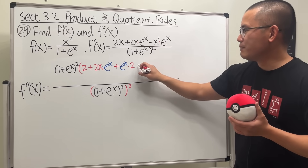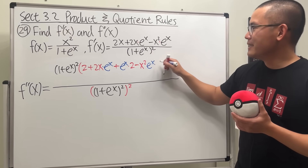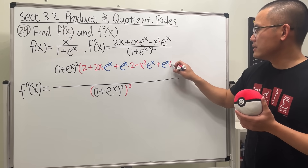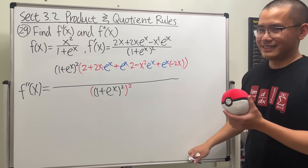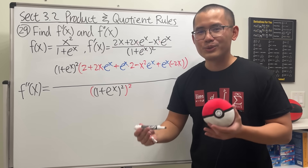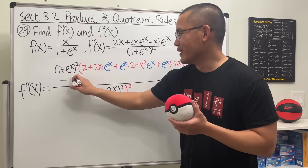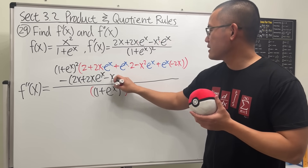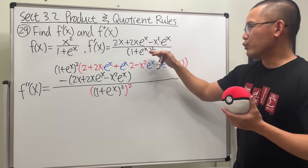Now we use the product rule again: keep this as the first function, so we have minus x² times its derivative eˣ, then add the second function eˣ times the derivative of the first, which is negative 2x. That's the first part of the top of the quotient rule. Now we subtract the top function: 2x + 2x·eˣ − x²·eˣ, and then multiply by the derivative of the bottom.